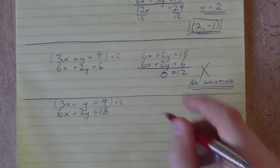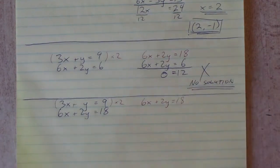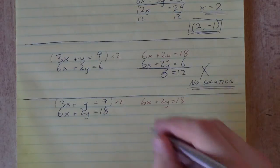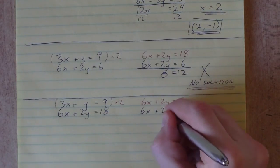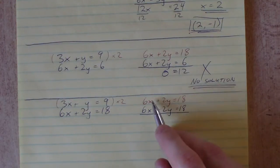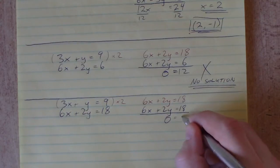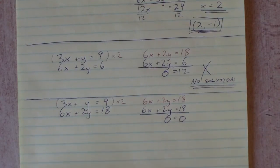Let's multiply the first equation by 2. We get 6x plus 2y equals 18, and we see that's identical to our bottom equation. Now if we subtract those: 6x minus 6x is 0, 2y minus 2y is 0, 18 minus 18 is 0. We get 0 equals 0.